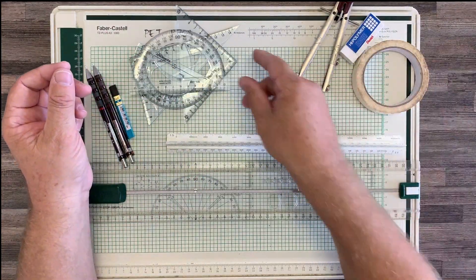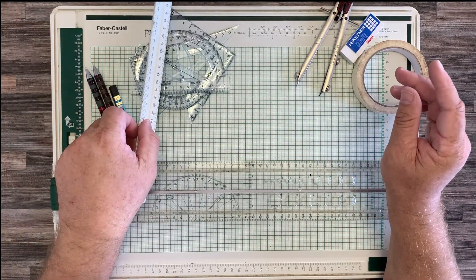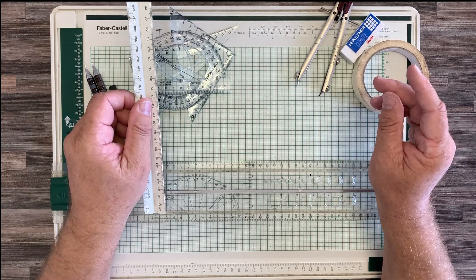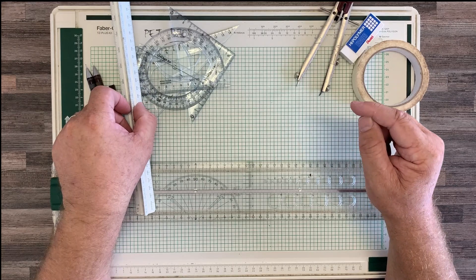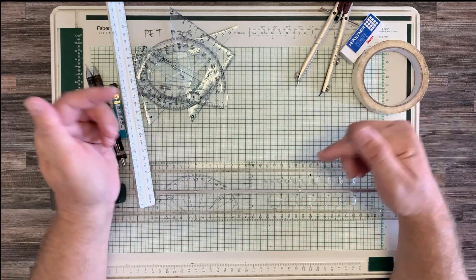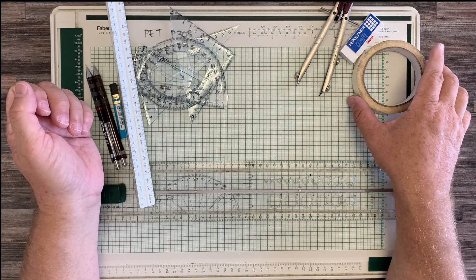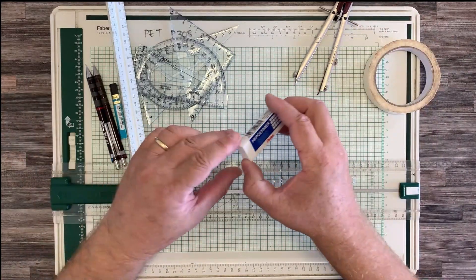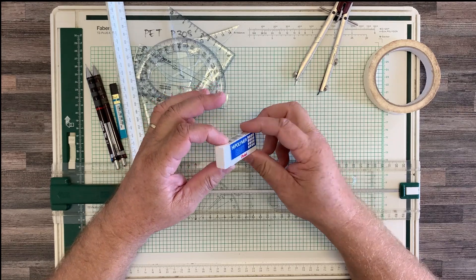All right, so that is a scale ruler. So that is quite important. You can get away with not using one, but then every time you measure something, you have to remember to calculate the size, so either double or half your dimensions. All right, then we've got an eraser because we will make mistakes, so it's important to get a good quality eraser.